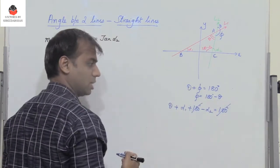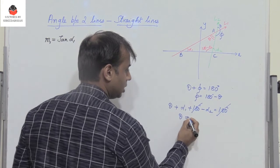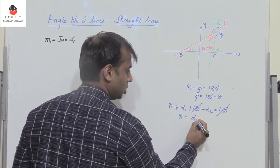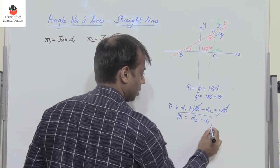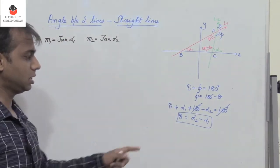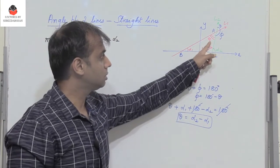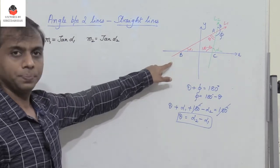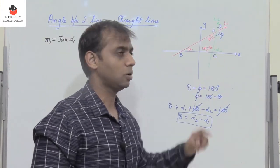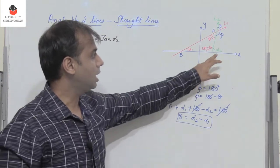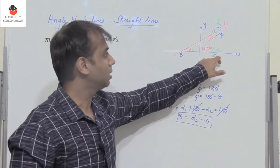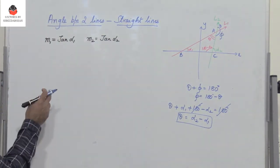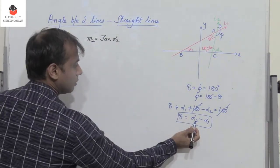The 180s cancel out. Moving alpha2 and alpha1 to the other side, theta equals alpha2 minus alpha1. So we have theta expressed in terms of alpha1 and alpha2, where alpha1 is the angle made by l1 with the horizontal axis and alpha2 is the angle made by l2 with the horizontal axis.